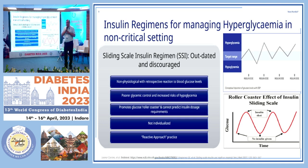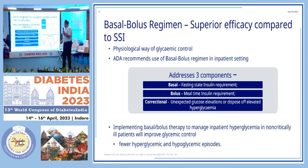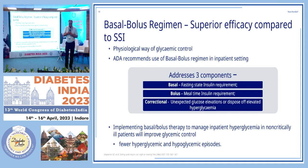If you do a basal bolus for this patient, all glycemia is better addressed. It's the most physiological way of giving insulin. Sliding scale is non-physiological — you're giving only when there is hyperglycemia. It causes poor glycemic control, increased risk of hyperglycemia, promotes a glucose roller coaster, and cannot predict insulin dosage requirements. It is not individualized and is a reactive approach, which should not be practiced.